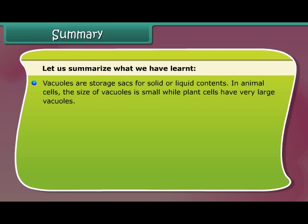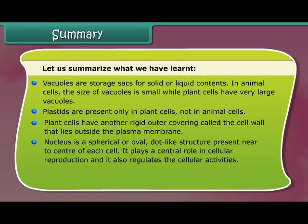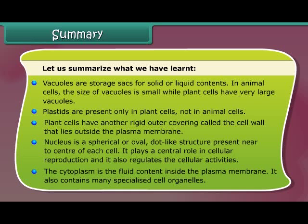Vacuoles are storage sacs for solid or liquid contents; in animal cells the size of vacuoles is small, while plant cells have very large vacuoles. Plastids are present only in plant cells, not in animal cells. Plant cells have another rigid outer covering called the cell wall, lying outside the plasma membrane, mainly composed of cellulose, which provides strength to the cell. The nucleus plays a central role in cellular reproduction and regulates cellular activities. The cytoplasm is the fluid content inside the plasma membrane and contains many specialized cell organelles.